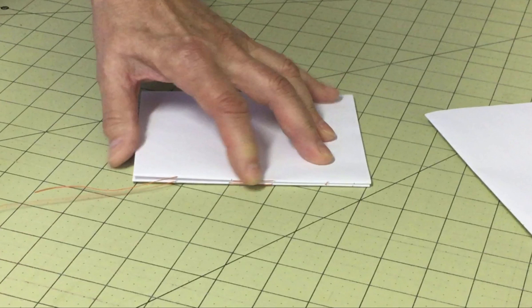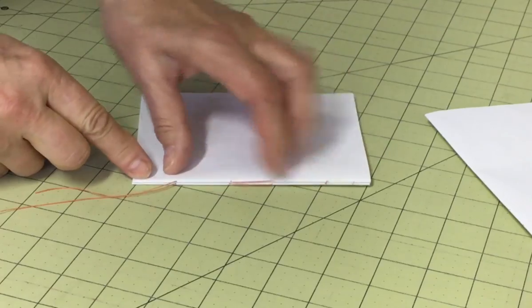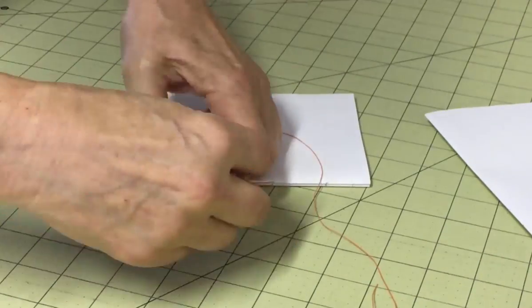The kettle stitch is a common bookmaker stitch used to link the signatures of your text block together. When you finish sewing the first two signatures of a text block, you can lock these two together with a simple square knot or a double knot.